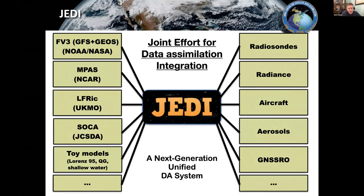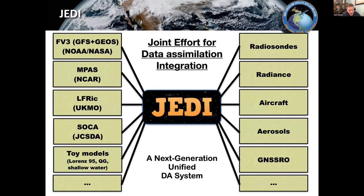JEDI is a unified data assimilation system. It sits between the observations and the models. On the left there's an incomplete list of models interfaced to JEDI, including FV3, GFS, GEOS, MPAS, ELFRIC, and SOCA — an ocean model from JCSDA. We also have toy models: Lorenz 95, a QG model, and a shallow water model for investigating DA algorithms. Neptune is also interfaced into JEDI. Once you interface your model with JEDI, you instantly have access to all these different observations — radiosondes, radiance, aircraft, aerosols, GNSS-RO, sea ice for ocean models, and more.